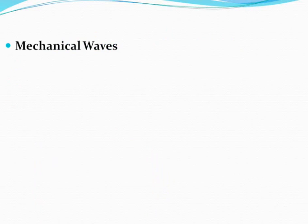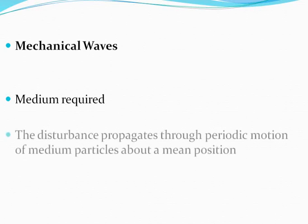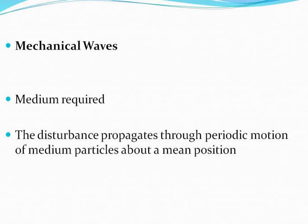The next type of waves is mechanical waves. In fact, these are the types of waves which we are going to focus on in this chapter. Mechanical waves require a medium to travel. When I make a sound from my mouth, the air particles near my mouth start vibrating. This causes the next air particle to vibrate, which causes the next air particle to vibrate and so on. The medium particles vibrate and because of this, the sound energy is transferred from my mouth to your ear. The disturbance in case of mechanical waves propagates through periodic motion of medium particles about a mean position.